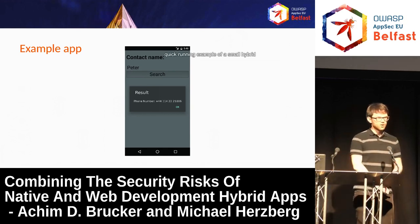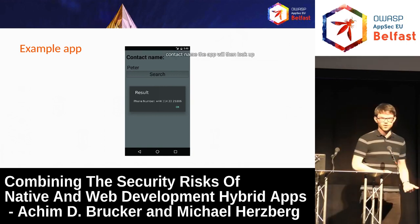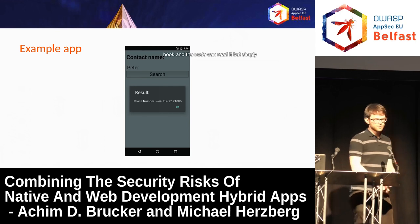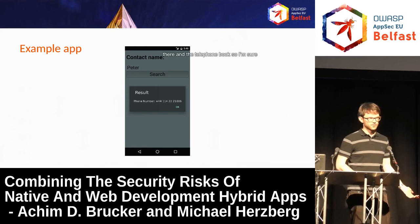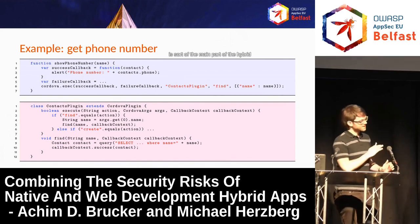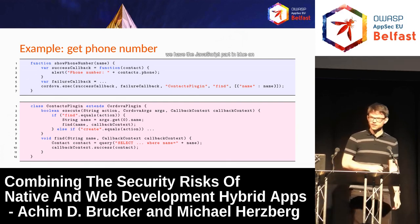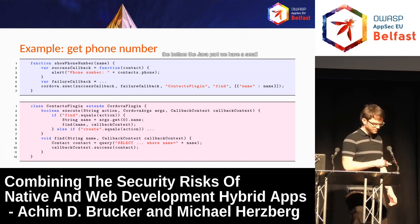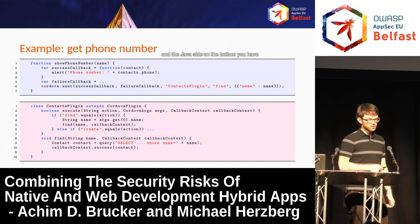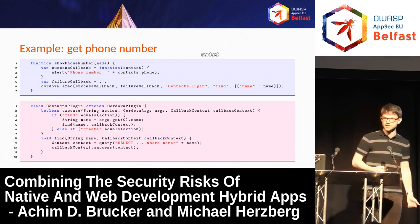Let's introduce a quick running example of a small hybrid app. This is a very simple app — it gives you one window where you can search for a contact name. The app will then look up the phone number from the local contact book and simply display the telephone number it found. The main part of the hybrid app has a JavaScript part on top in blue and the Java part on the bottom. On the JavaScript side you have a small function, show phone number, and on the Java side you have one class that is the plugin used to access the local contact book.